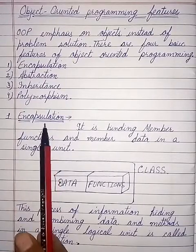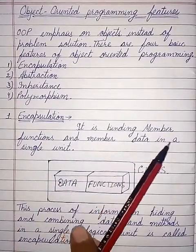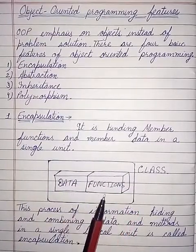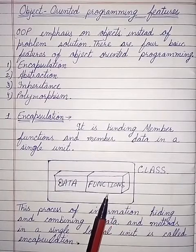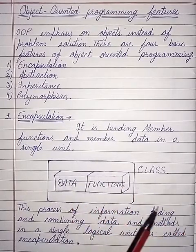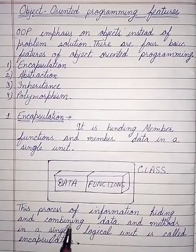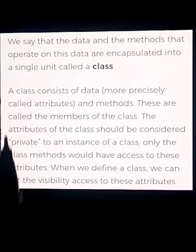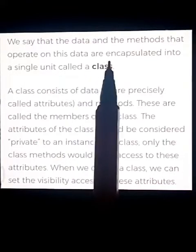Encapsulation means binding member functions and member data in a single unit. One single unit means one class — the data and functions are binded together. This process of information hiding and combining data and methods in a single logical unit is called encapsulation. We can say that the data and the methods that operate on this data are encapsulated.